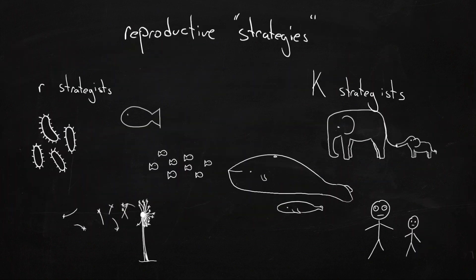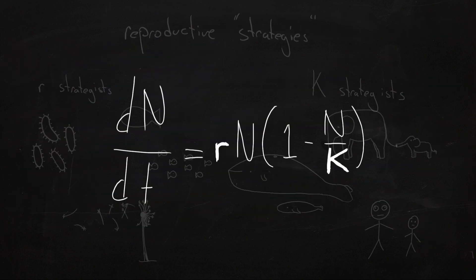They're called R and K strategists because of the population dynamics equation they're based on. It's just which factor seems to be more important in the context of the model.